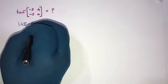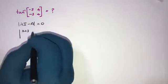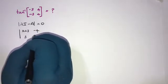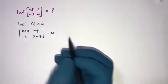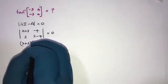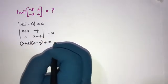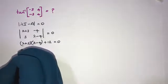We know det(λI - A) = 0. So here we get λ plus 3, minus 4, plus 3, and λ minus 4 equal to 0. We can simplify this: λ plus 3 times λ minus 4, minus minus, so plus 12, equals 0.